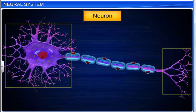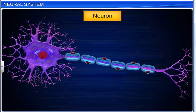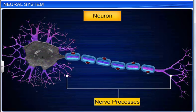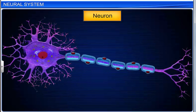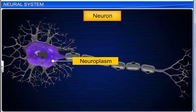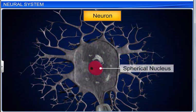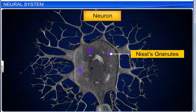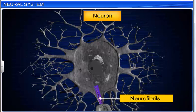A neuron is a branched nerve cell and is the longest cell in the body. The two main parts of a neuron are the cytone and nerve processes. The cytone, also called the soma or cell body, contains granular cytoplasm called neuroplasm. The neuroplasm contains a large spherical nucleus, granular bodies called Nissl's granules which help in protein synthesis, a large number of mitochondria to provide high energy for the conduction of impulses, and thread-like neurofibrils which help in the conduction of impulses.